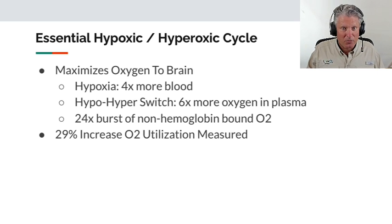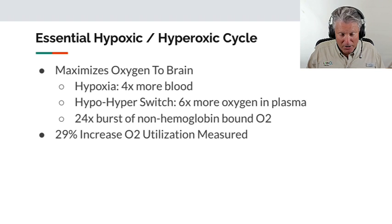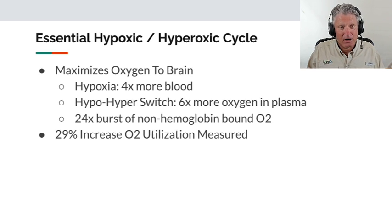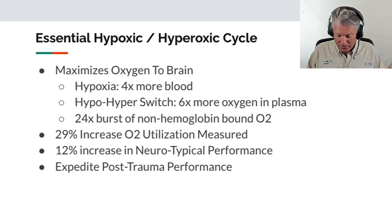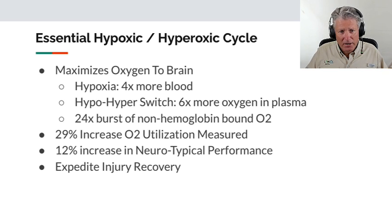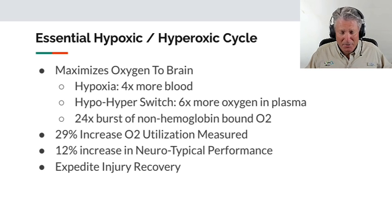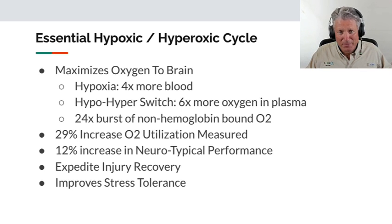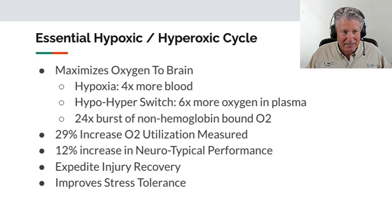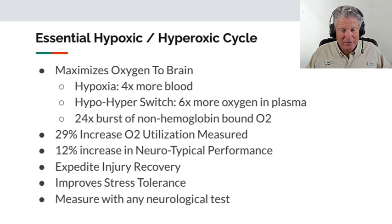This has been life-changing for many thousands of LiveO2 users. From a performance perspective, we have corroborating data showing a 29 percent increase in oxygen used by the brain, which generally correlates to at least a 20 percent improvement on athletic and cognitive performance tests. For TBI and concussion, we see dramatic reductions in recovery time — and if the injury appears to be a bruise on the brain, restoration of brain function can appear immediate. From a management perspective, this training technique also radically improves stress tolerance. And it's easy to reproduce these results because you can measure them with any neurological test.